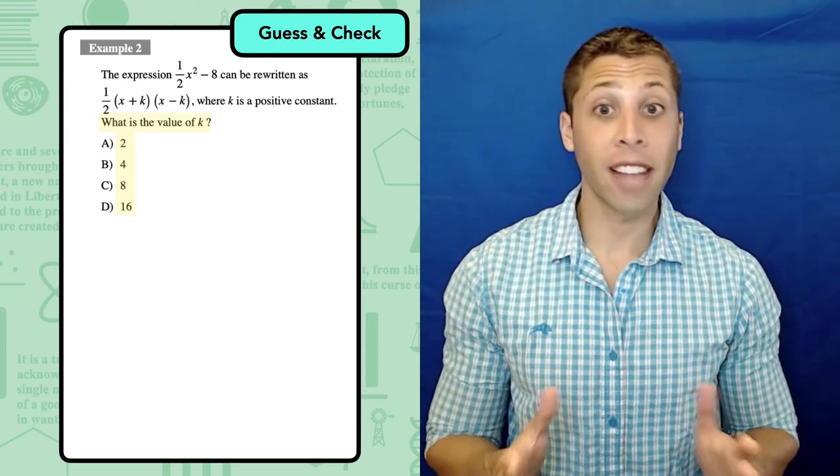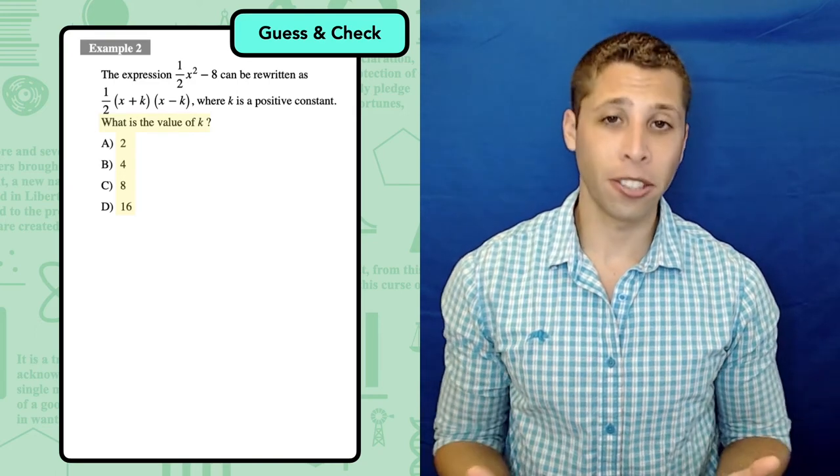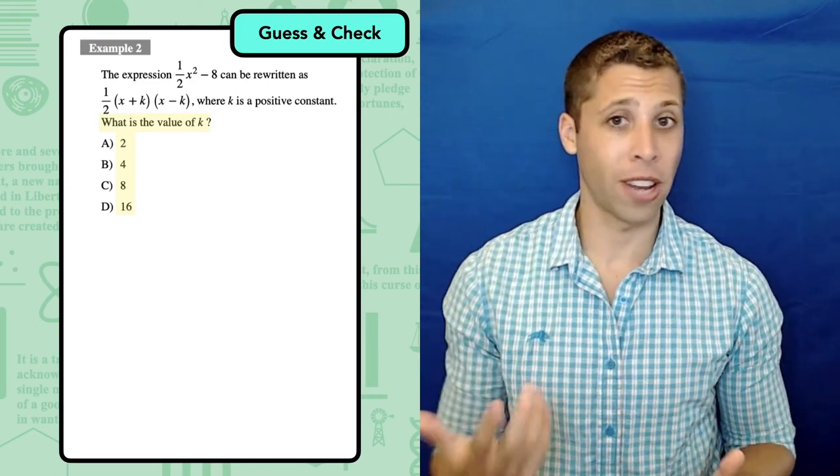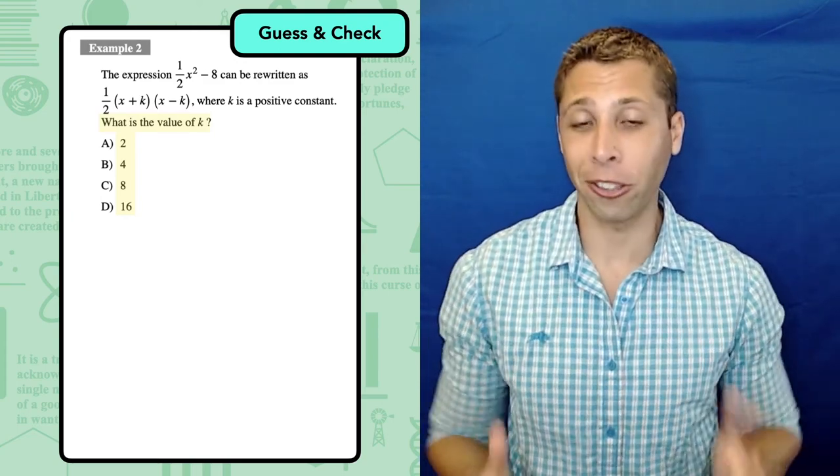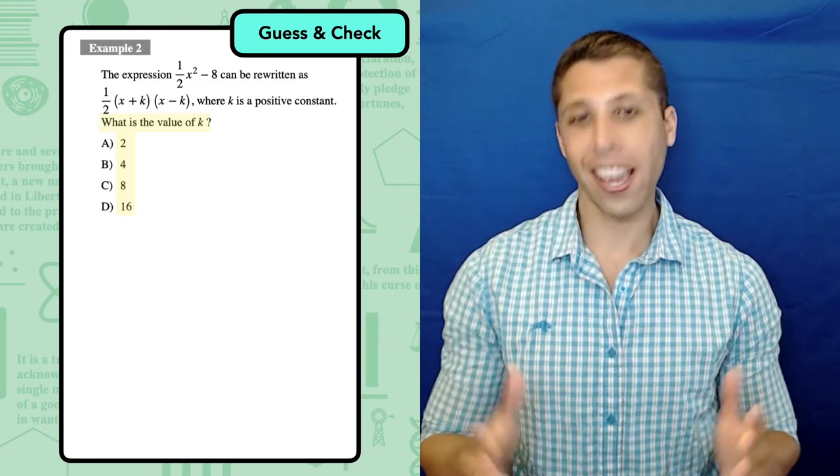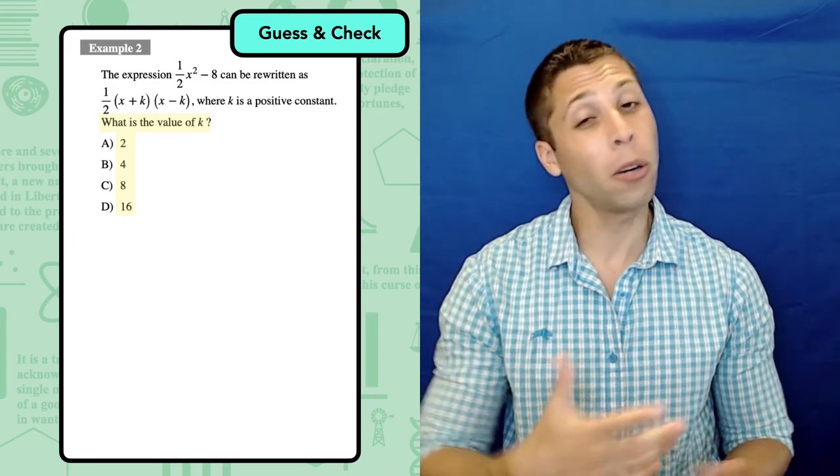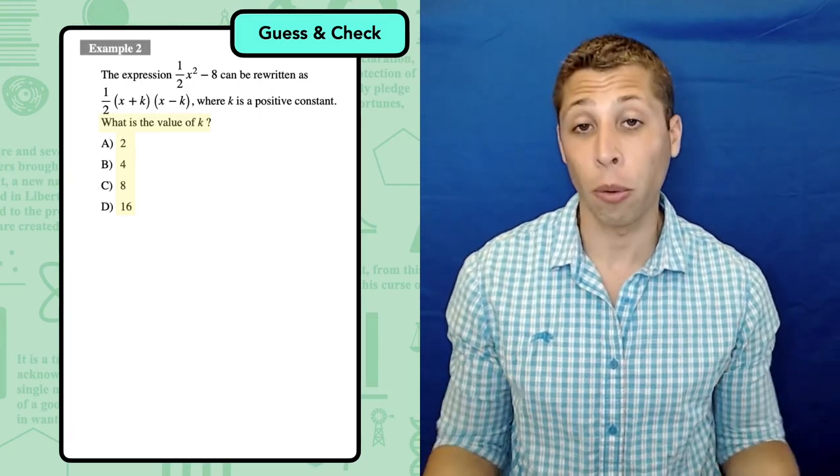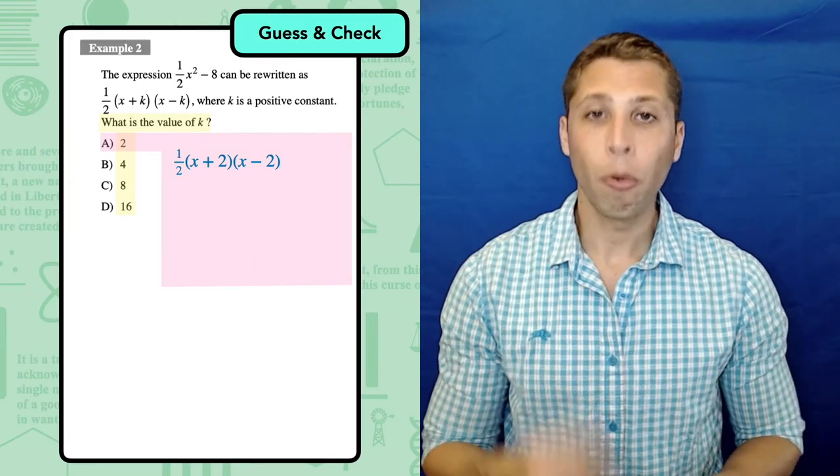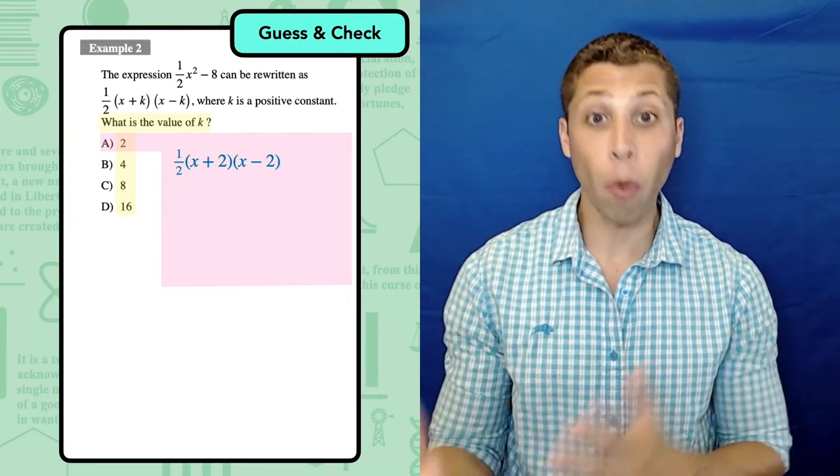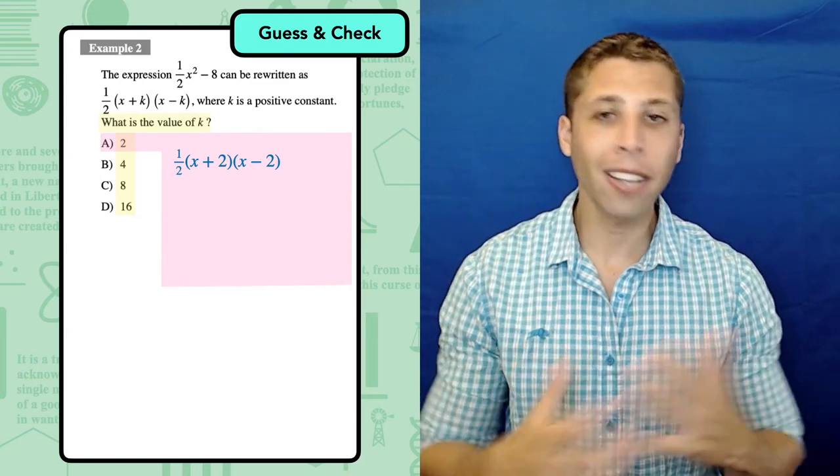When you're coming up with that first guess, it's okay to just start with whatever answer jumps out. A lot of SAT questions are designed to lead us toward a certain answer choice, and it's okay to follow that lead, as long as we actually do the work of checking our guess. In this case, choice A seems like it might be right, since half of 8 is 4, and then splitting it up even further would mean trying 2. Guess and check by replacing the K's with 2's. We probably knew from the start that this question was testing foiling and factoring, which are related operations, kind of like multiplication and division. But guess and check lets us do this question in reverse. Instead of factoring the first expression, we can FOIL the second expression.